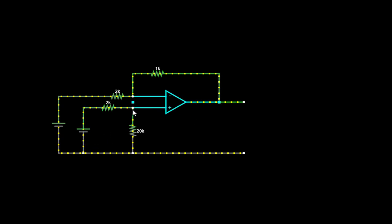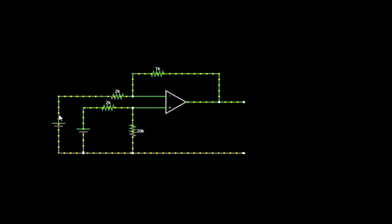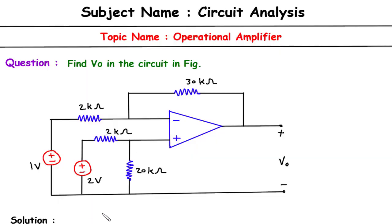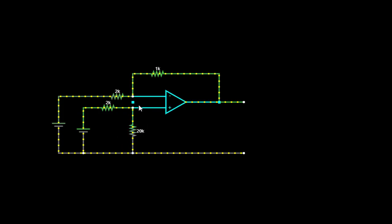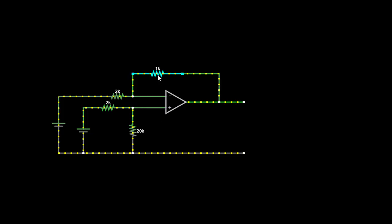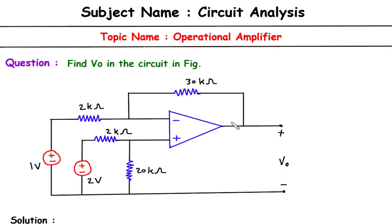Now we will verify this circuit. Here, this is the 1 volt voltage source in series with 2 kilo-ohm. Then this is the 2 volt voltage source in series with 2 kilo-ohm. Then this is the 20 kilo-ohm resistor. This is the ideal op-amp, and this resistor is 1 kilo-ohm. This is 30 kilo-ohm. We have to find VO — the output voltage of this circuit.